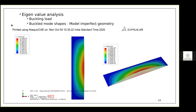The plate has buckled in a single half-wave along its length — this is the buckled mode shape. The buckling load from the eigenvalue analysis is 4935. Note that ABAQUS is not confined to any specific unit system — you can follow any system you like. Here I used Newton and mm units, so the buckling load is 4935 N.